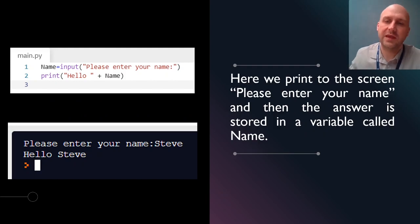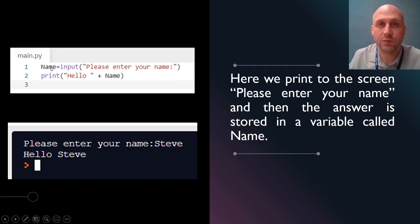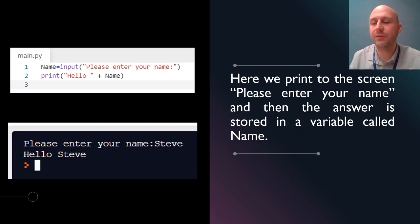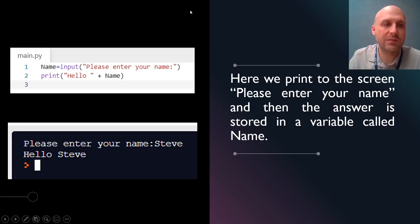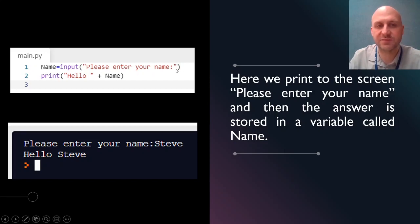So here we've got 'name', which is the variable — that's where the response is going to be stored. Because when they type something in, it needs to be stored somewhere, and we store things in programming languages using a variable. We've got the variable name that we're storing what they type into, we've got the input command with the brackets, and then we've got the message on the inside that you want to display.